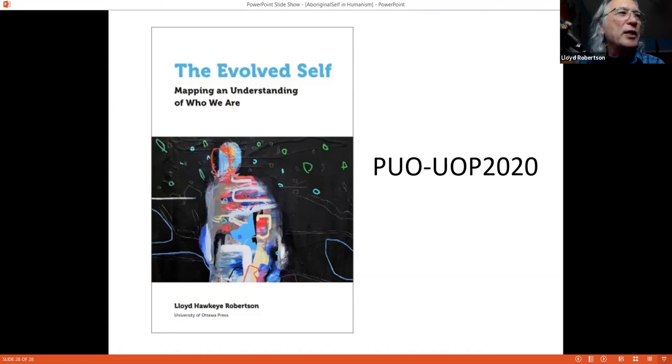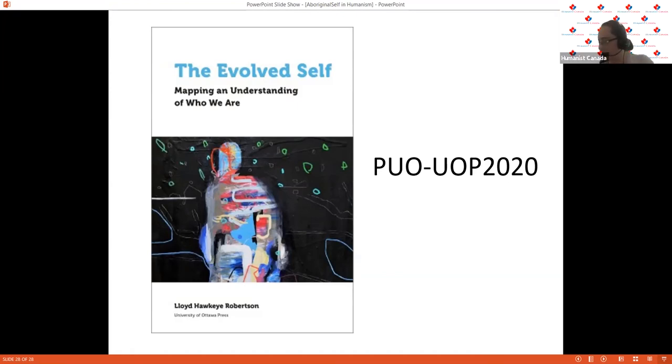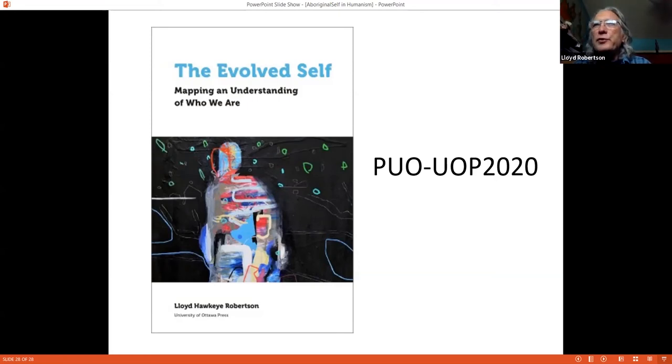Thank you, Lloyd, for your presentation. I see there's one question from Vincent and the question is don't identifiers like humanists and environmentalists incorporate indigenous views or align with indigenous values. For example, our relationships with people, earth, animals, et cetera.